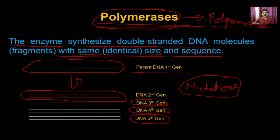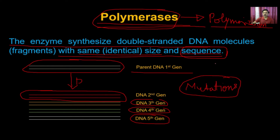Mutations or DNA degradation occur when the synthesized DNA doesn't match the parent. For example, if the parent DNA is 1 kb and the synthesized DNA is only 890 base pairs, it reduces the size and loses information. Additionally, if the sequence is not identical to the parent DNA, it contributes to acquiring different types of mutations, which could be life-threatening or affect the physiology of the cell.